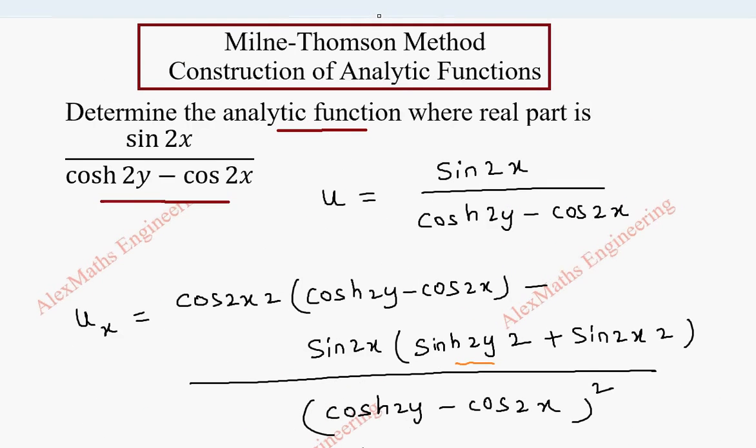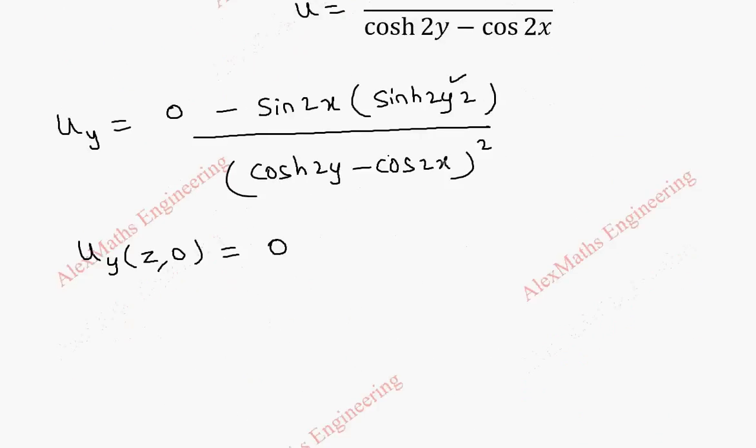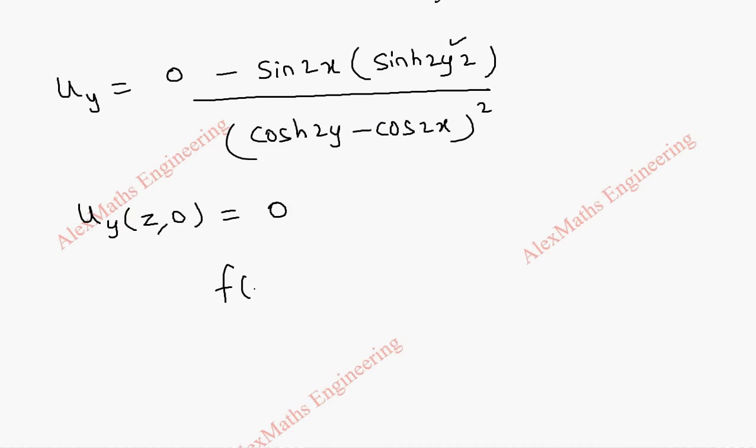As for the question we have to find analytic function. So f of z. So we know f of z is u plus iv. So f dash of z becomes u_x plus iv_x.